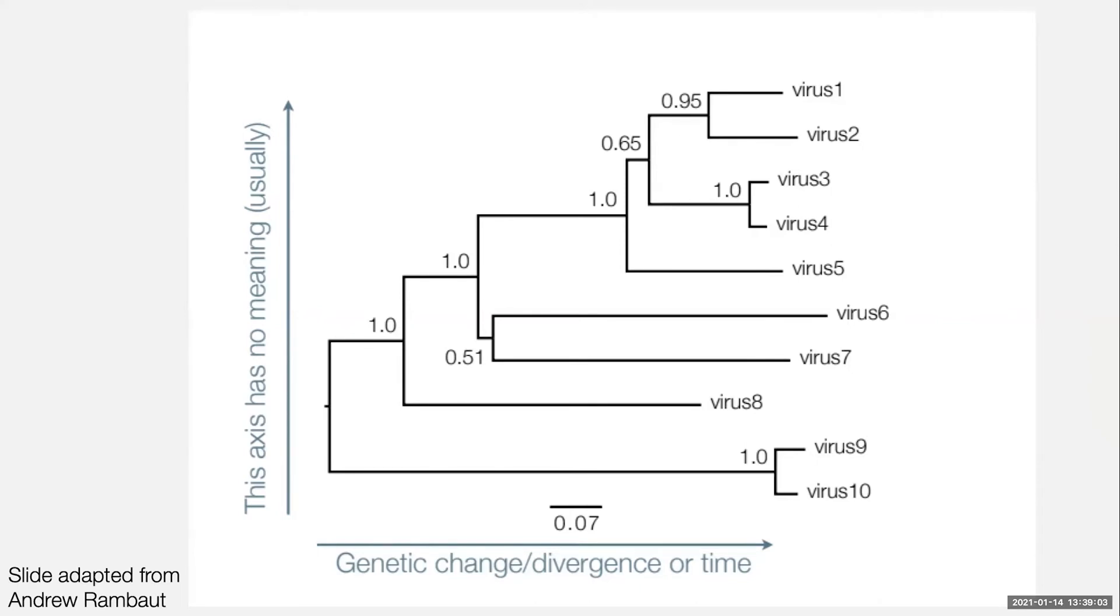You can convert these trees to time trees using the concept of the molecular clock, which is just that genomes have a fairly predictable rate at which they change. So it's just a straight swap from genetic change to time. And that can be useful for answering different types of questions.